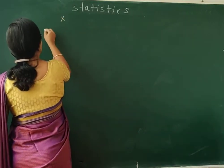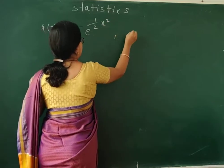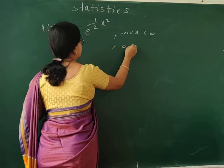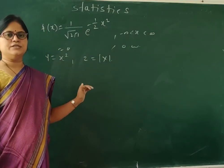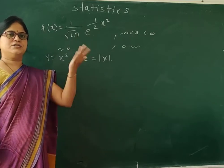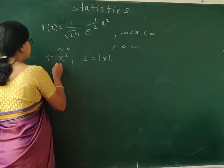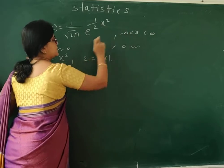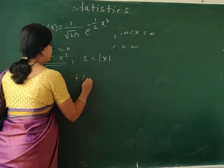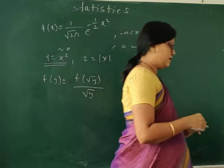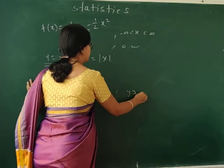Let's work through an example. Suppose f(x) = (1/√(2π)) · e^(−x²/2) for x from −∞ to ∞, which is the standard normal distribution. We need to find the distribution of Y = X² and Z = |X|. For Y = X², using the result derived on the board, f_Y(y) = f(√y) / √y, since the distribution is symmetric.